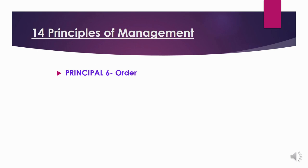The seventh principle is discipline. According to Fayol, discipline refers to sincerity, obedience, respect of authority, and adherence to the rules and regulations of the enterprise. Subordinates should respect their superiors and obey orders. Discipline is an important requisite for smooth running of the enterprise and is required not only from subordinates but also from management. Discipline can be enforced with good supervisors at all levels, clear and fair arrangements with workers, and when sanctions or punishments are judiciously applied.